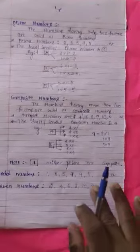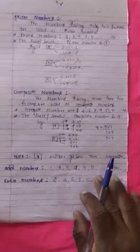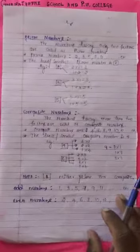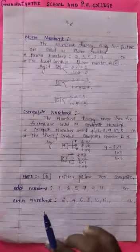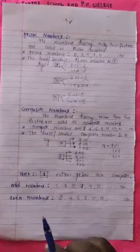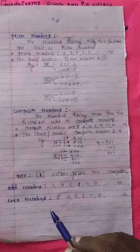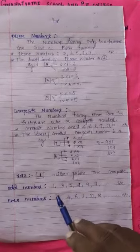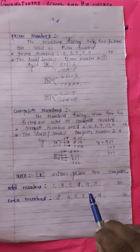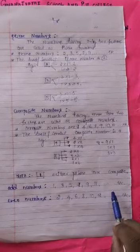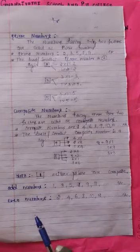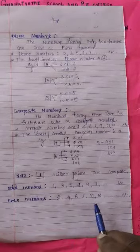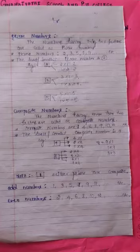Next we have another set of numbers: odd numbers and even numbers. We know that odd numbers are 1, 3, 5, 7, 9, 11, and so on. And even numbers are 2, 4, 6, 8, 12, and so on.